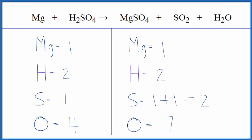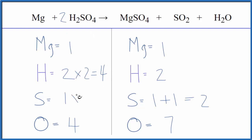I like to leave the oxygens till last, and then the hydrogens later in the balancing as well. I'm going to start with the sulfur atoms. If I put a two in front of the H2SO4, two times two gives me four hydrogens, and one times two — that will balance the sulfur atoms. Then for the oxygens, I have four times two, which gives me eight.